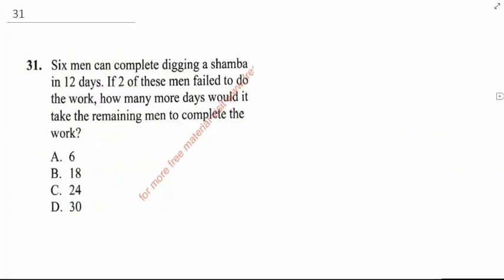Question 31 says: Six men can complete digging a chamber in 12 days. If two of these men failed to do the work, how many more days would it take the remaining men to complete the work?